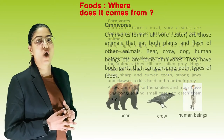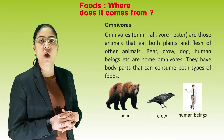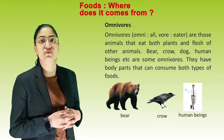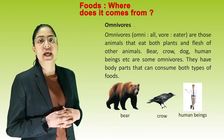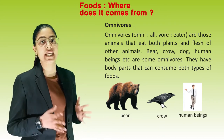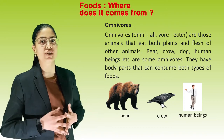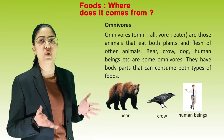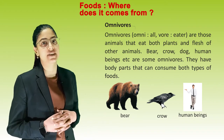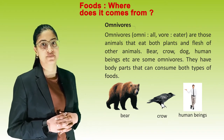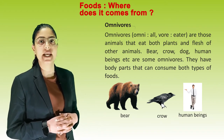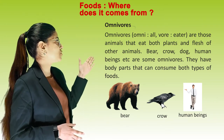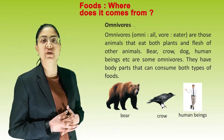Omnivorous - 'omni' means all, whereas 'vore' means eater. Omnivores are those animals that eat both plants and flesh of other animals. Bear, dog, human beings, etc. are some omnivores. They have body parts that can consume both types of foods.